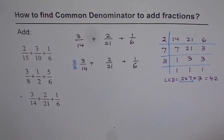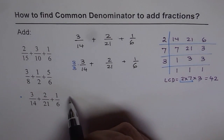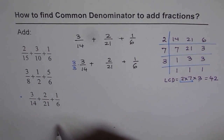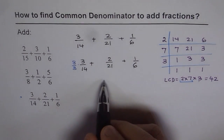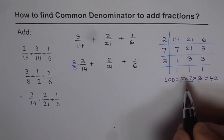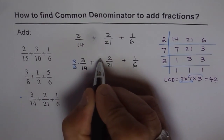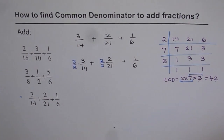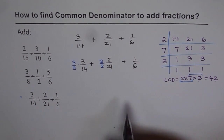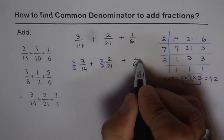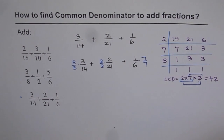3 over 3 equals 1 — if you multiply anything by 1, you get the same number. These are equivalent fractions; we are multiplying both numerator and denominator by the same thing. For the second fraction, to make 21 into 42, we need to multiply by 2, so we multiply both numerator and denominator by 2. For 1 over 6, since 6 is 2 times 3, we need to multiply by 7, so we multiply by 7 over 7. This ensures the same denominator for all three fractions.